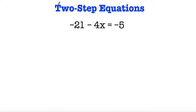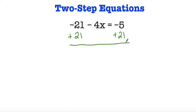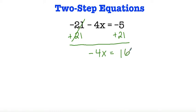And lastly, we have negative 21 minus 4x is equal to negative 5. So here I do have negative 21 — in order to get rid of that, I have to add 21 on both sides. Negative 21 and positive 21 cancel out. I'm left with negative 4x on the left side is equal to. Now I have negative 5 and positive 21. Since the signs are opposite, I'm going to subtract: 21 minus 5 is 16. And since the number with the greatest absolute value is 21 and that's positive, my answer is positive 16.